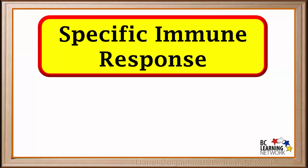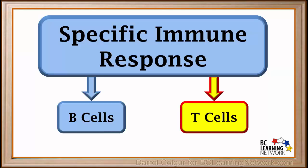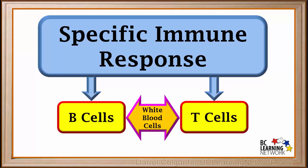A specific immune response, also called a tertiary immune response, singles out one particular agent that can harm us and responds to that. For example, if we catch a certain virus, our specific immune system will destroy that particular virus. Specific immune responses in our body are carried out by two main types of cells: B lymphocytes or simply B cells, and T lymphocytes or simply T cells. B cells and T cells are both types of white blood cells.